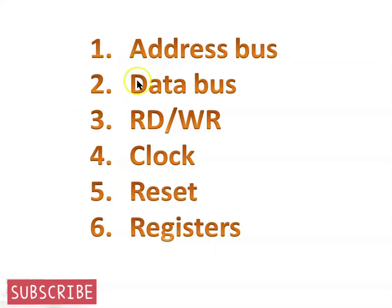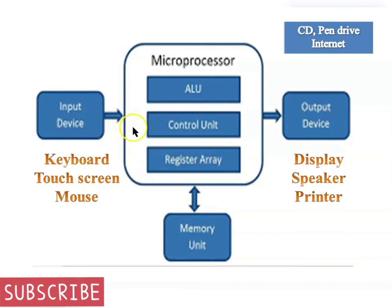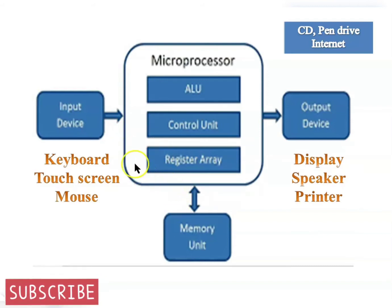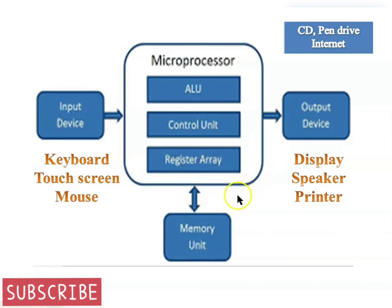Before discussing the architecture, we must know about some important terms used in microprocessors. Everything a computer does from user input commands — from keyboard, mouse, and so on — goes into the microprocessor, and the microprocessor searches for a program according to those commands. The electrical hard lines between input devices and the microprocessor, and the microprocessor to storage, is called the address bus. After searching the program, the microprocessor fetches and prepares it and sends it to the output devices. The electrical connections between memory and the microprocessor, and the microprocessor to output devices, is called the data bus.